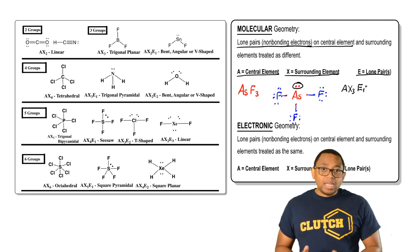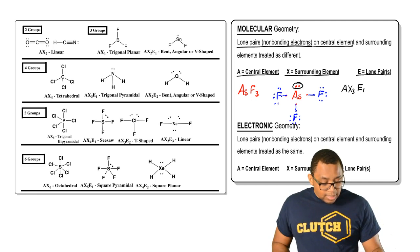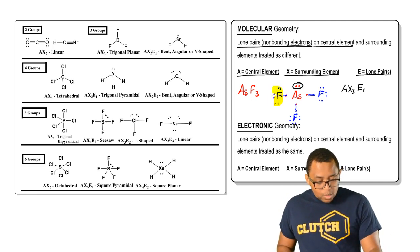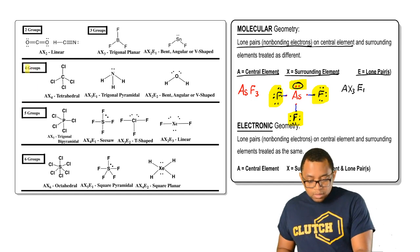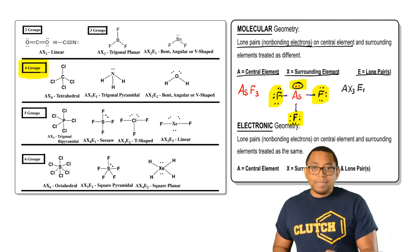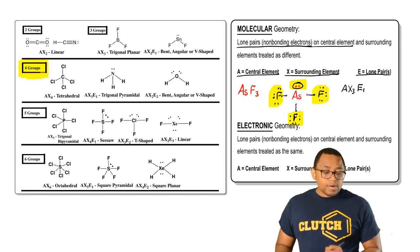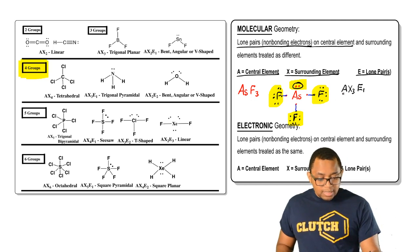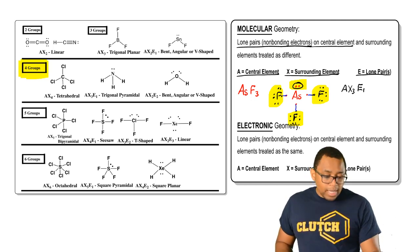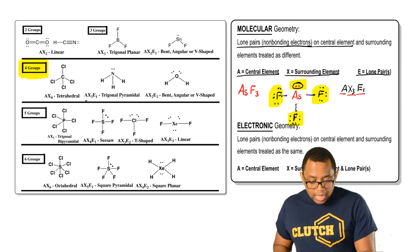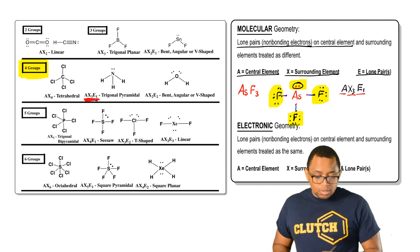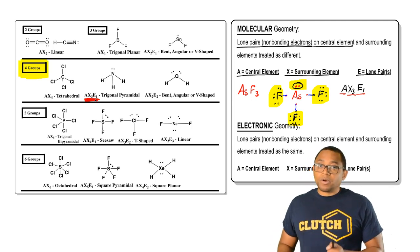Looking at our table to the left, we would just look and see that we have one, two, three, four groups around the central element, which would put us in this category here. Then we just look and see what's the shape when we have one central element, three surrounding elements, and one lone pair on the central element. That would fall right here, so the shape would be trigonal pyramidal.